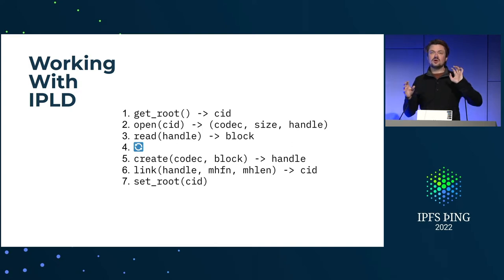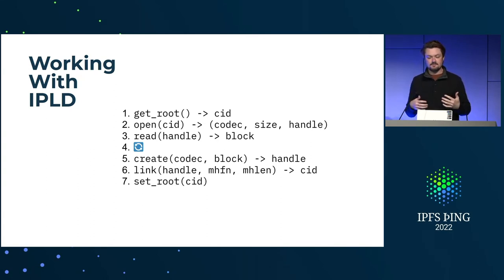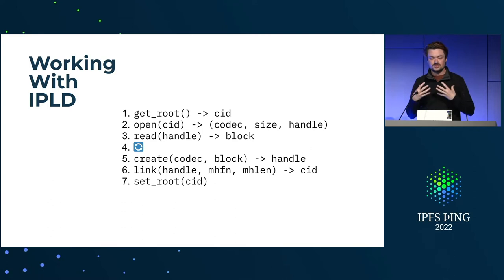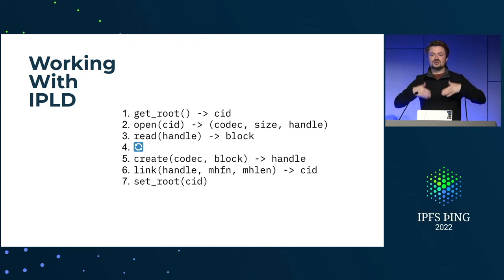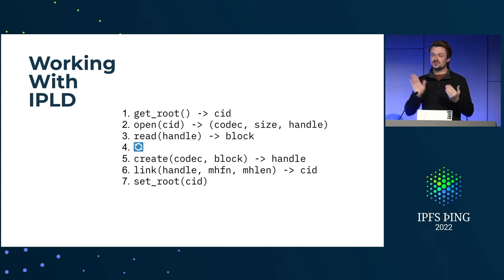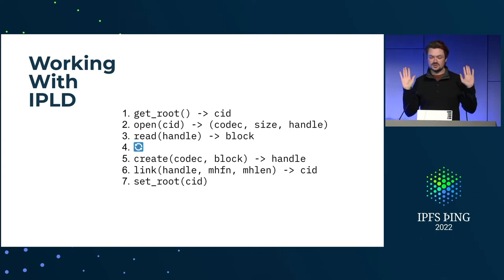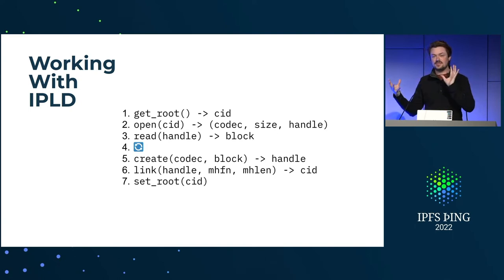Crossing the WASM boundary is difficult in general, so we had to think carefully about how to make IPLD work reasonably well across it. We have three read functions and three write functions in the FVM. To start, you first ask the system for your root node — your state root — via a syscall. You pass a pointer into your memory and ask the system to write the CID back to that address. Once you have your root CID, you open it, which gives you a handle — like a file handle — to your root block in the state tree. This also tells you the codec and size so you can decode it.